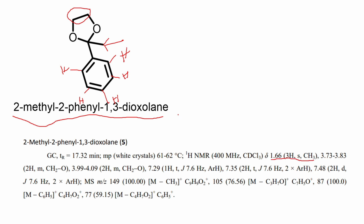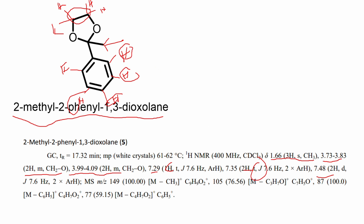According to the Clayton argument, these four CH2 protons should show the same chemical signal, giving five signals total. But experimentally they show different chemical signals. The data shows: 1.66 ppm (3H, singlet) for the methyl; 3.73–3.83 ppm (2H, multiplet) for one set of CH2O protons; 3.99–4.09 ppm (2H, multiplet) for the other set — confirming two different chemical shifts for those four protons.